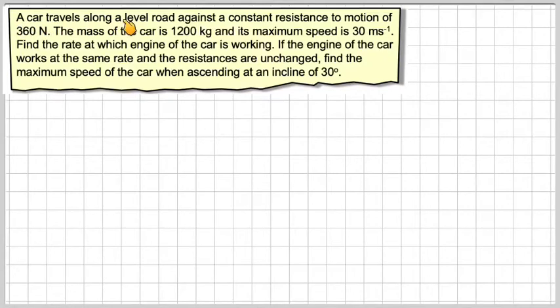A car travels along a level road against a constant resistance to motion of 360 newtons. The mass of the car is 1,200 kilograms and its maximum speed is 30 meters per second. Find the rate at which the engine of the car is working.